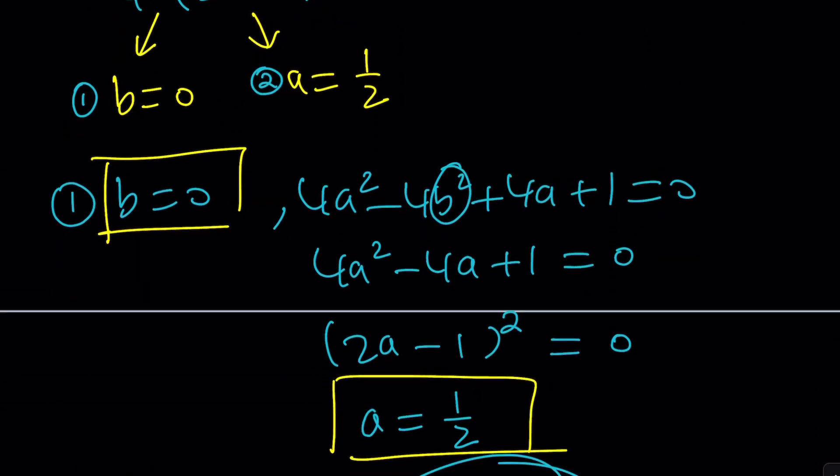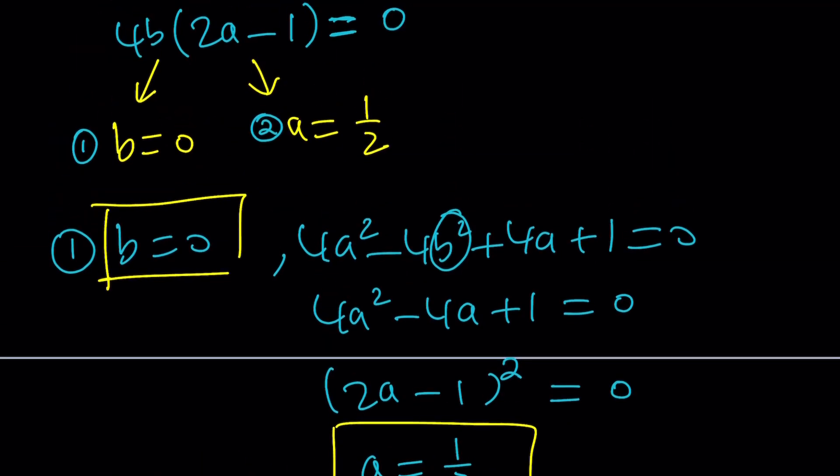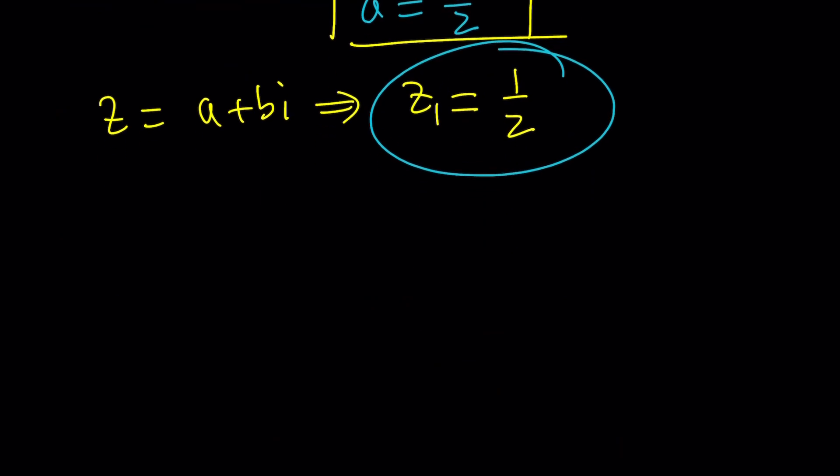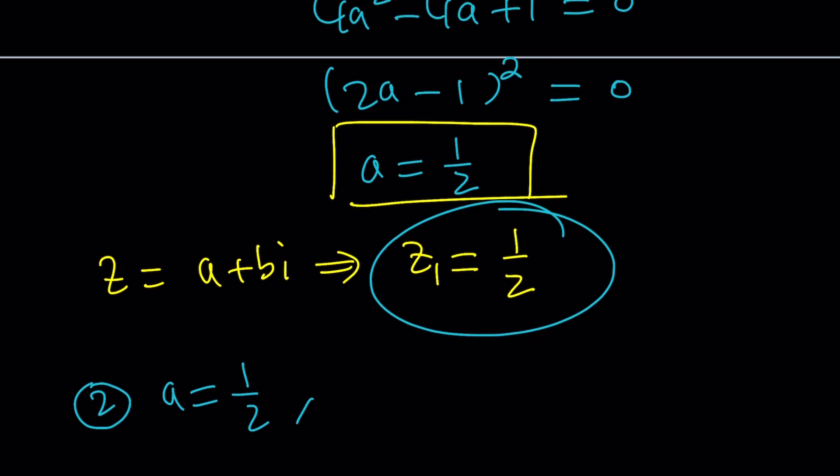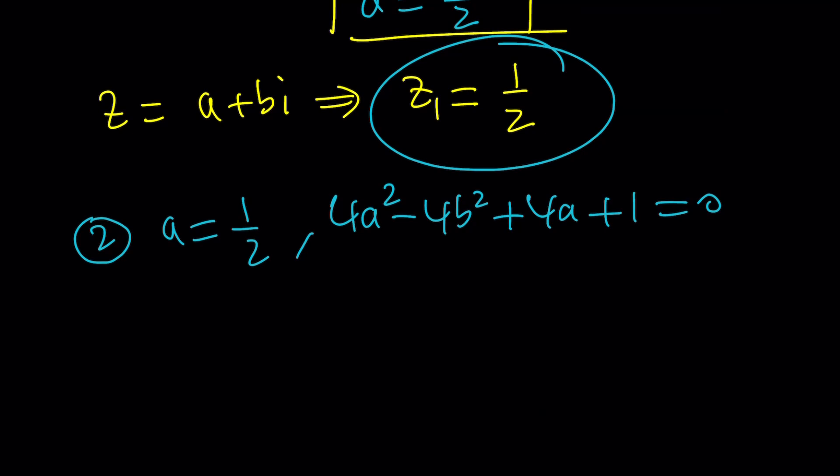That doesn't give you all the solutions, that's why we have case number 2. Ready for case number 2? We're gonna look at a = 1/2 as the second case and see what that gives us. Again, let's remember our second equation: 4a² - 4b² + 4a + 1 = 0. This is even better because we have a lot of a's, well at least 2.